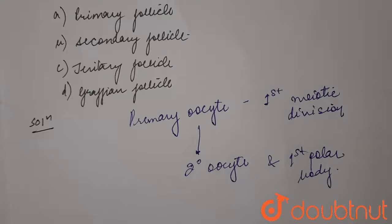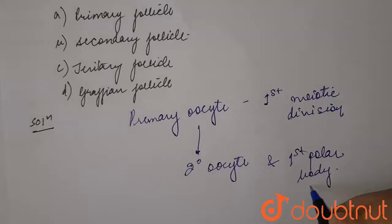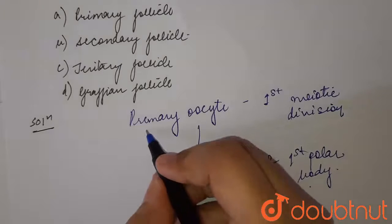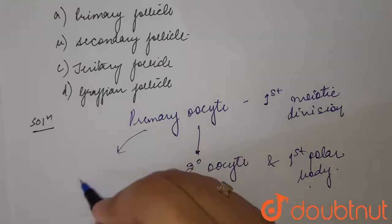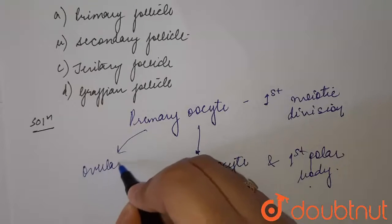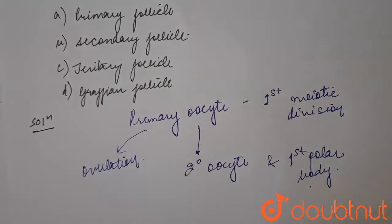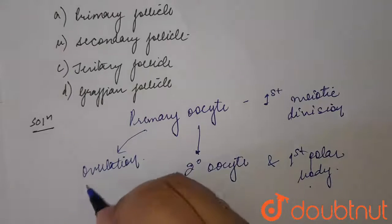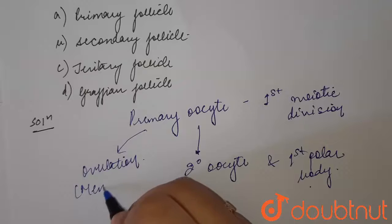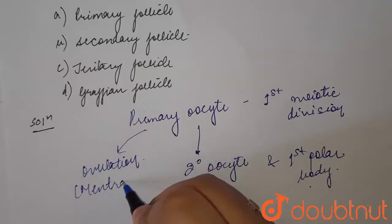This primary oocyte will lead to ovulation, which is the release of egg from the ovum. During the menstruation cycle in females, it happens during the menstrual periods.